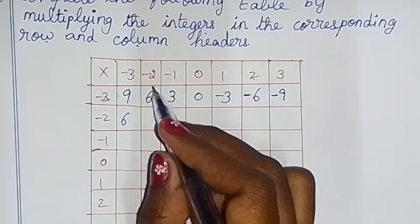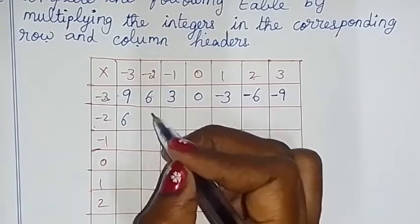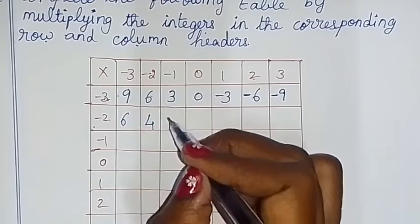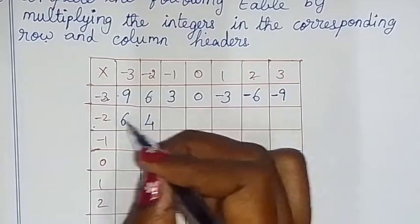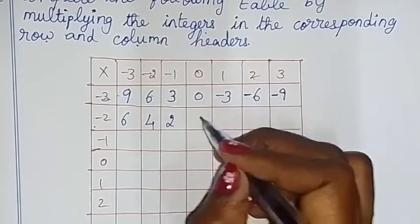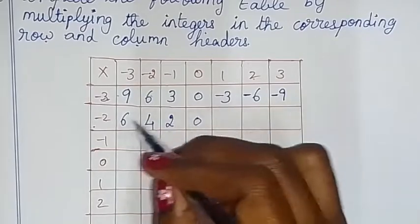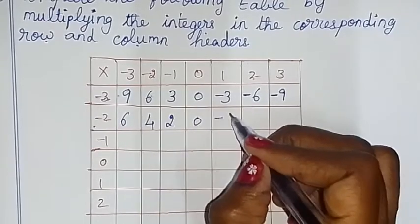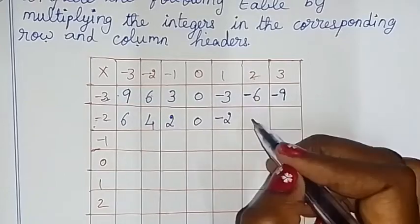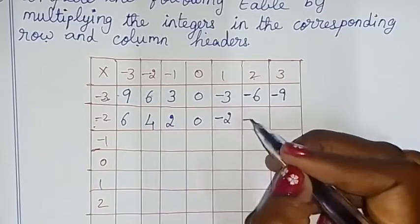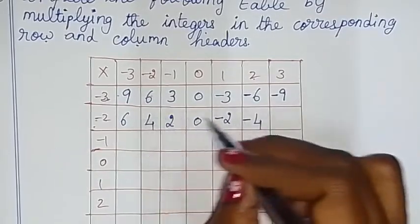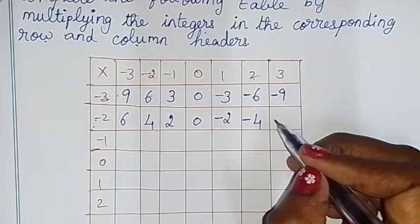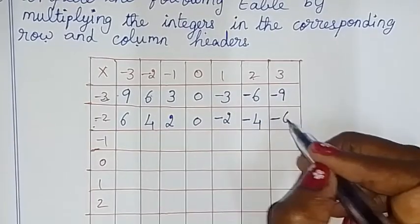Here, minus 2 plus 2 is plus 2, 2's are 4. Now, here, minus 2 minus 2 is plus 2, 1's are 2. Any number into 0 is 0. Now, here, minus 2 into 1 is minus 2. Here, minus 2 is minus 2, 2's are 4. Now, minus 2 is minus 2, 2's are 4. So, minus 2 is minus 2, 3's are 6.